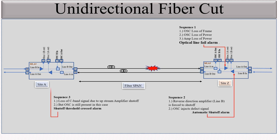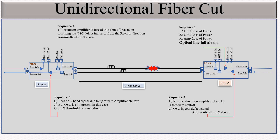On this amplifier you will get the set-off threshold cross alarm — sequence 4. The upstream amplifier is forced into set-off based on receiving the OSA defect indicator from the reverse direction. On the reverse direction it will receive a defect indication from the OSA coming from the reverse direction amplifier, and here the automatic set-off alarm will appear. So if there is a single fiber cut, we will get these four alarms on these four amplifiers.